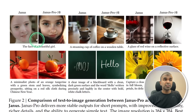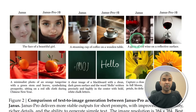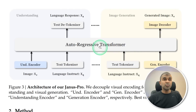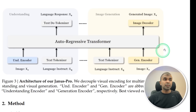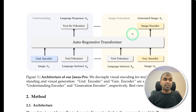Here is the comparison between the previous version and the current version — the latest version is far better. They use an auto-regressive transformer for understanding: it uses an encoder and text tokenizer. As output you get text. For image generation, it uses a text tokenizer, a gen encoder, and an image decoder to decode the image.